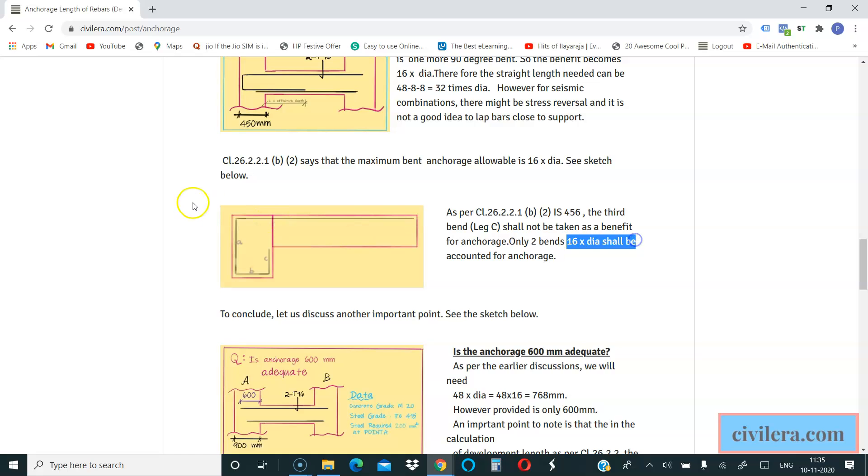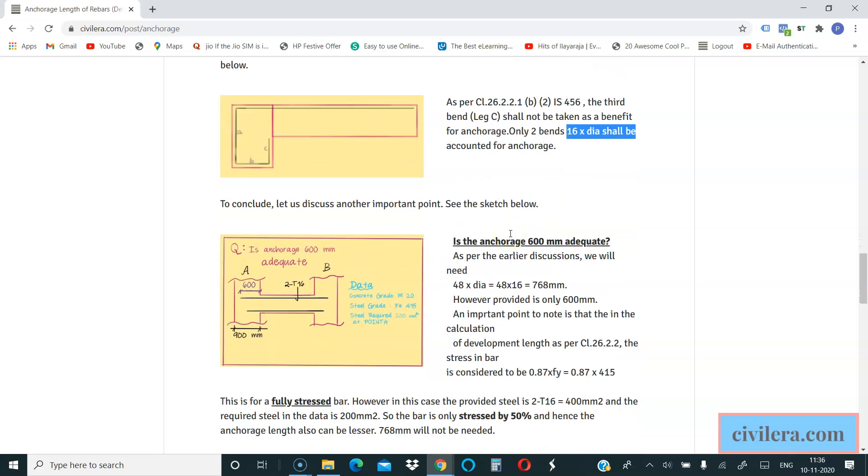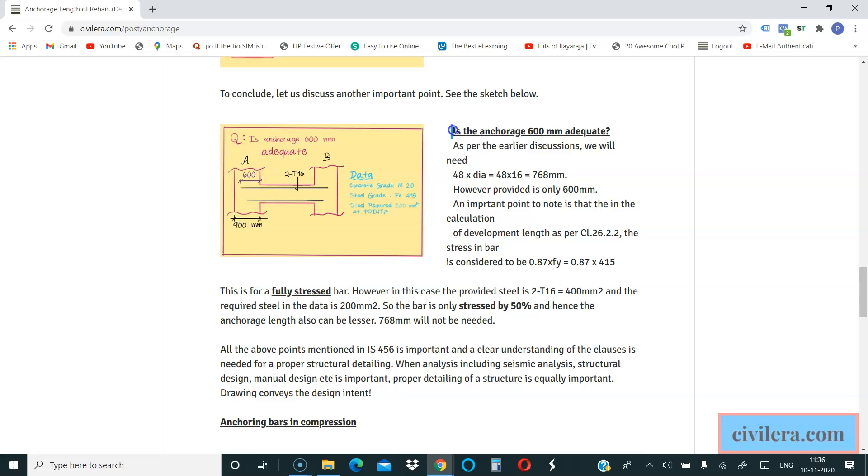As the benefit, so first bend gave you eight times, the second bend gave you another eight times, so 16 times already. So the third leg C, the leg C here, is not really effective as per the code, so that is something that you need to understand as well.